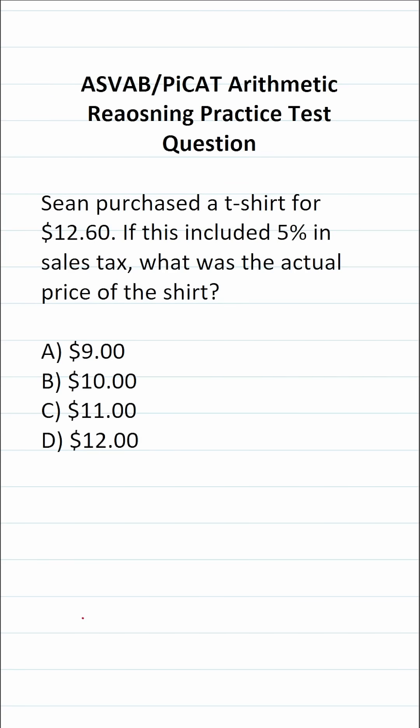This arithmetic reasoning practice test question for the ASVAB and PICAT says, Sean purchased a t-shirt for $12.60. If this included 5% in sales tax, what was the actual price of the shirt?